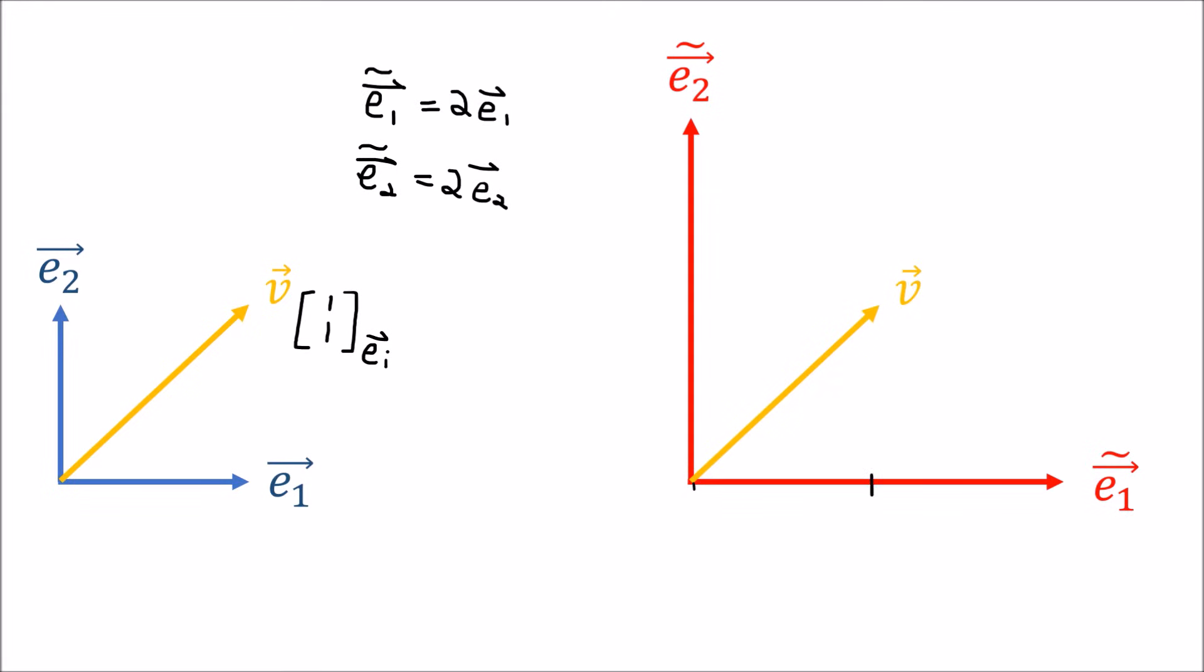So what are the components of V in the new basis? Well, it looks like they're about 1 half, 1 half. So while the basis vectors grew by a factor of 2, the vector components shrunk by a factor of 2. They did the opposite thing.